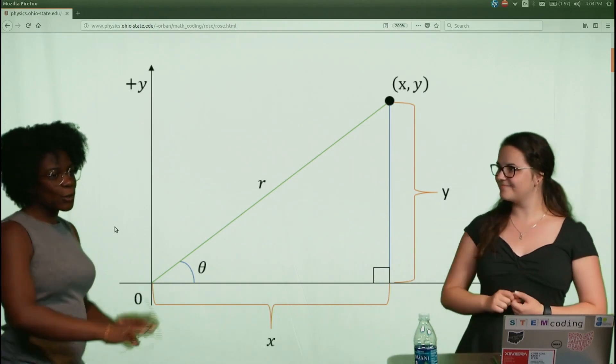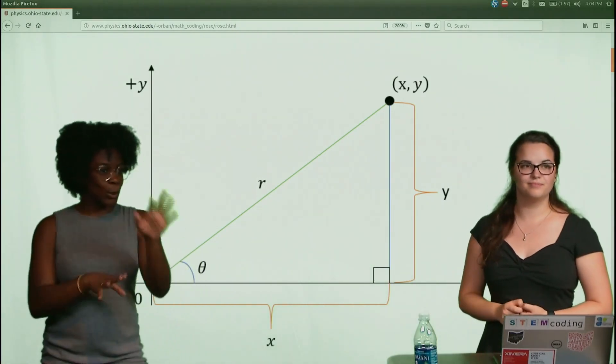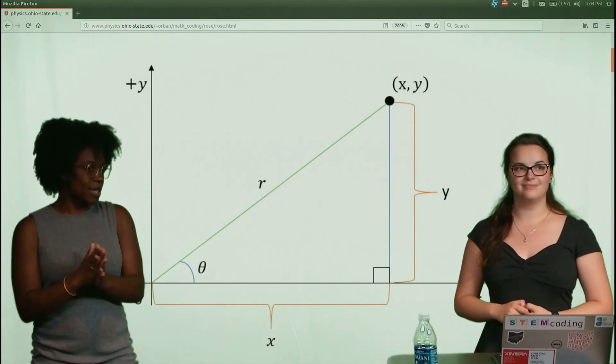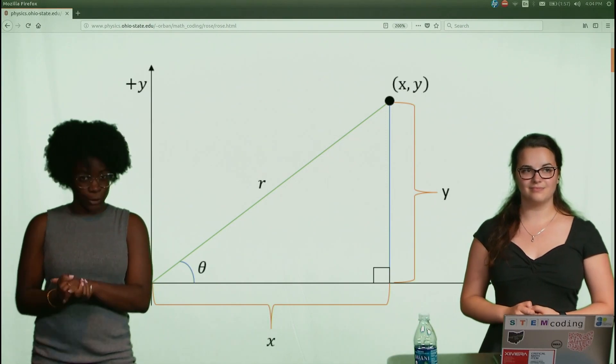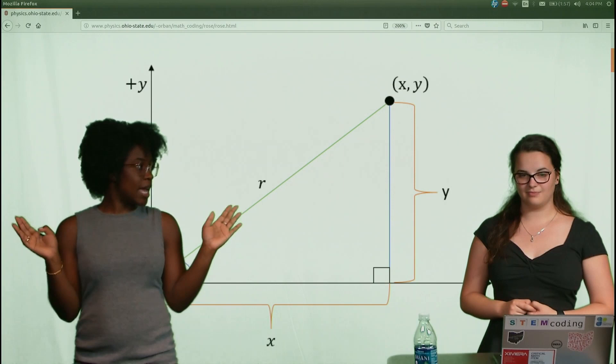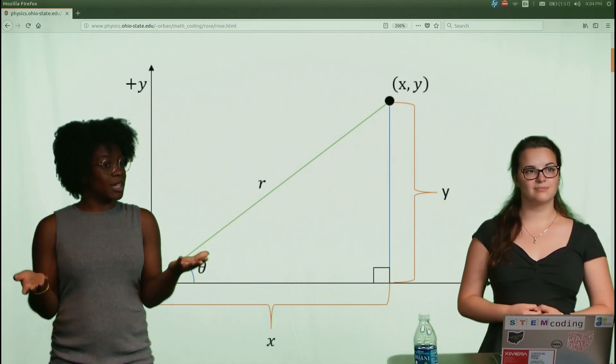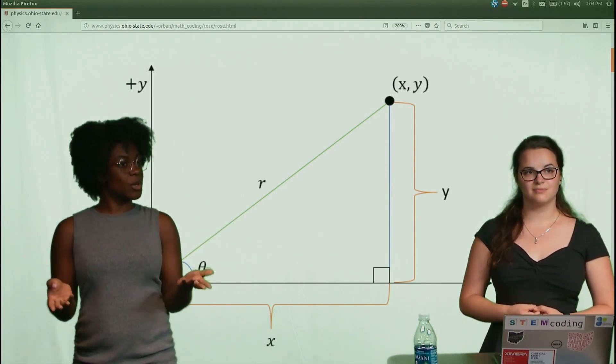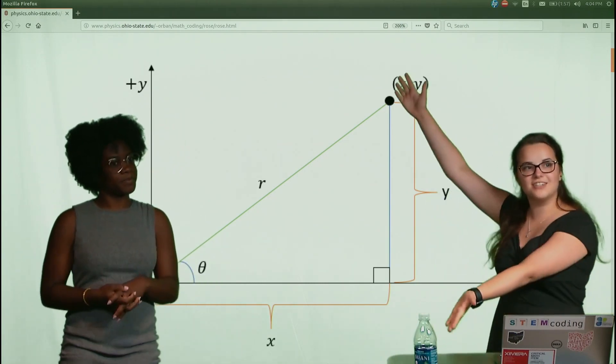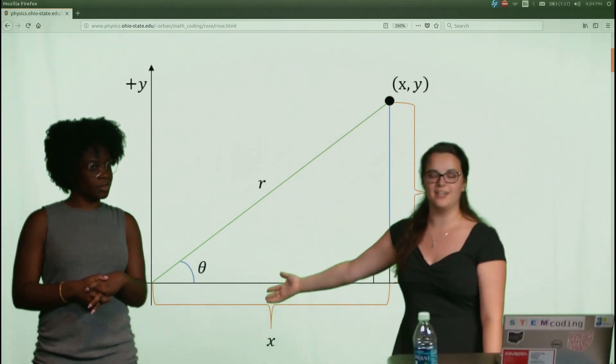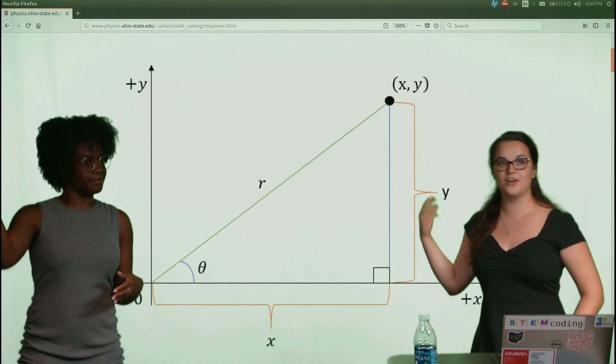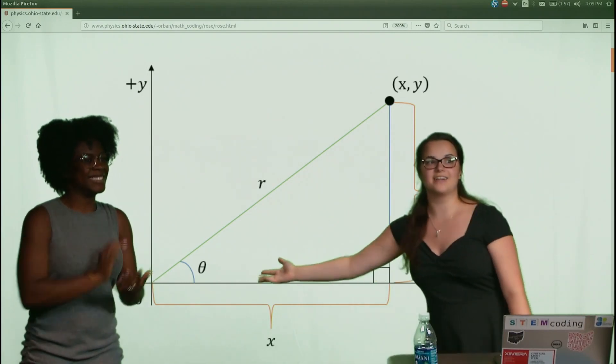And then, so in order to really understand the things going on here, we have to remember SOHCAHTOA. And that just means that sine is opposite over hypotenuse, cosine is adjacent over hypotenuse, and tangent is opposite over adjacent. But for this particular activity, we're only really concerned with sine and cosine and we will not be using tangent for our calculations. Ok, so looking at this triangle, our sine of theta, this angle right here, is gonna be Y over a radius. And our cosine is gonna be X over the radius.